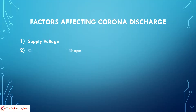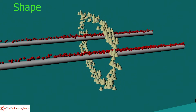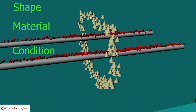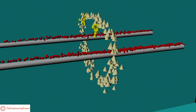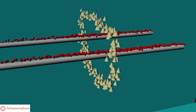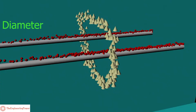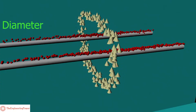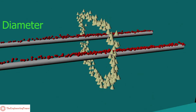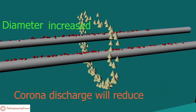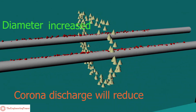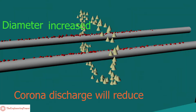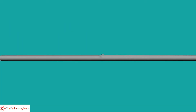The second factor is the conductor shape and surface. Corona effect also depends upon the shape, material, and condition of the conductor. Corona discharge has an inverse proportionality relationship with the diameter of the conductor — if the diameter of the conductor is increased, the corona discharge will reduce considerably, and vice versa.